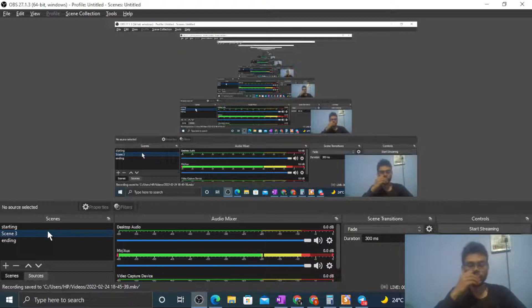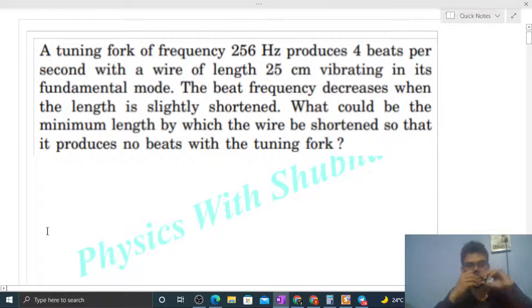Okay, hi everyone. Today let's discuss one interesting problem. It says a tuning fork of frequency 256 Hz produces 4 beats per second with a wire of length 25 cm vibrating in its fundamental mode. The beat frequency decreases when the length is slightly shortened. What could be the minimum length by which the wire be shortened so that it produces no beats with the tuning fork?